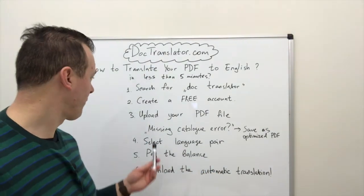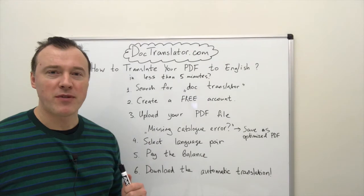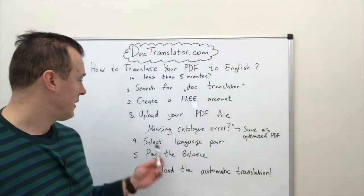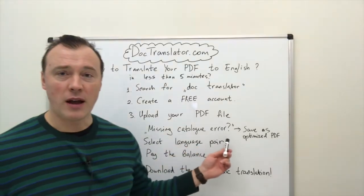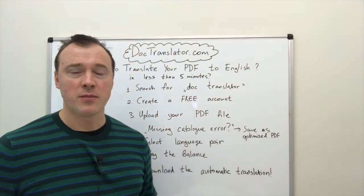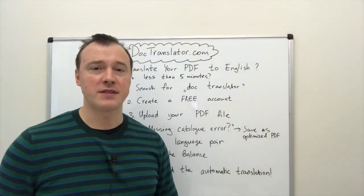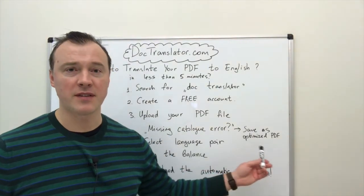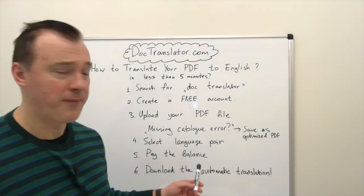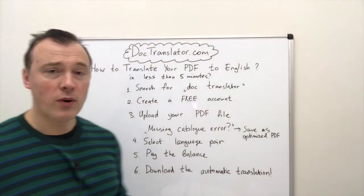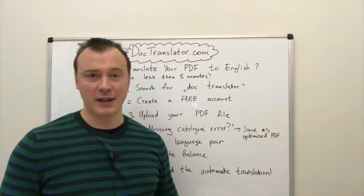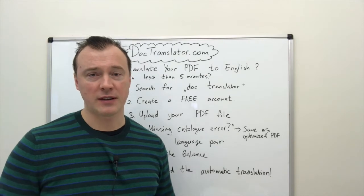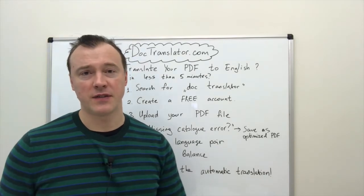In step number three, you need to upload your PDF file. If you get a missing catalog error, please make sure your PDF is saved as an optimized PDF — that's the quick solution for that. Step number four: you need to select your language pair. If it's Spanish, select original Spanish, and if it's a translation into English, set up translation into English.